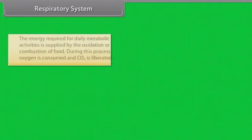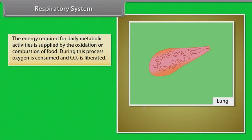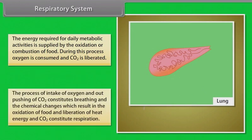Respiratory System. The energy required for daily metabolic activities is supplied by the oxidation or combustion of food. During this process, oxygen is consumed and CO2 is liberated. The process of intake of oxygen and outpushing of CO2 constitutes breathing, and the chemical changes which result in the oxidation of food and liberation of heat energy and CO2 constitute respiration.